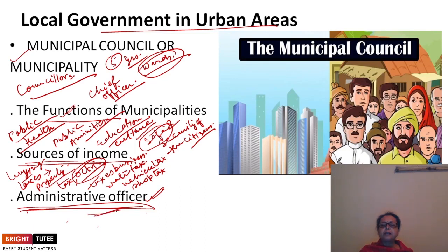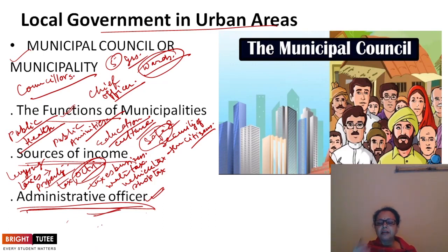As permanent employees appointed by the state government, the administrative officers implement decisions made by elected members. The chief officer does not work alone — other officers like health officers, shop inspectors, engineers, and inspectors of primary schools also perform administrative functions. Together, this entire team works across different branches for the development of the cities.